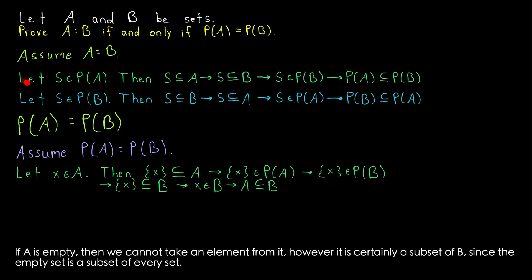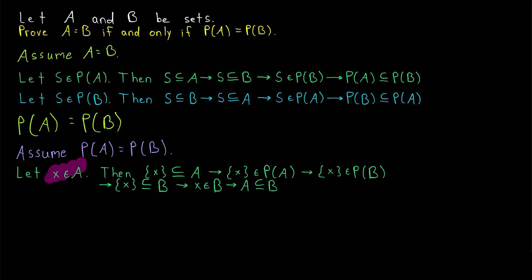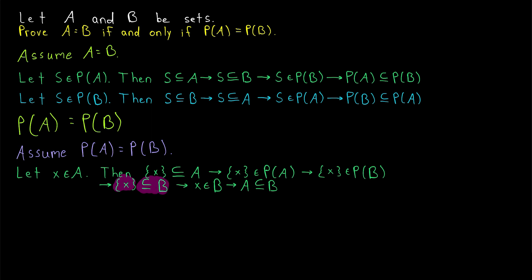This part is a little bit more complicated than the first part. Just as with any subset proof, we begin by taking an arbitrary element X from A, and we want to show that element is also in B. Since X is an element of A, the set containing X is by definition a subset of A. By definition of power set, that means the set {X} is an element of the power set of A. But we assumed the power set of A equals the power set of B, so {X} must be an element of the power set of B. That means by definition of power set that {X} is a subset of B, and then by definition of subset, X is an element of B. So any element of A is also in B; thus A is a subset of B.